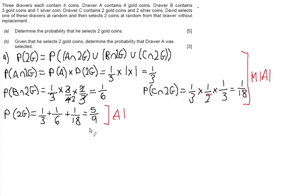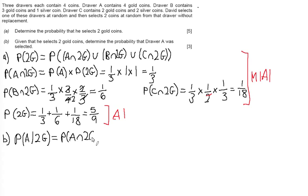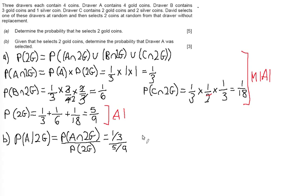For Part B, given that he selects two gold coins, we need to determine the probability that Draw A was selected. So we want P(Draw A selected | two gold coins), which equals the probability of Draw A and two gold coins divided by the probability of two gold coins. We've already worked both of these out — P(A and two gold) is one third, and P(two gold) is five ninths.